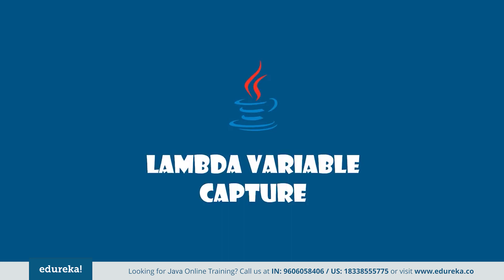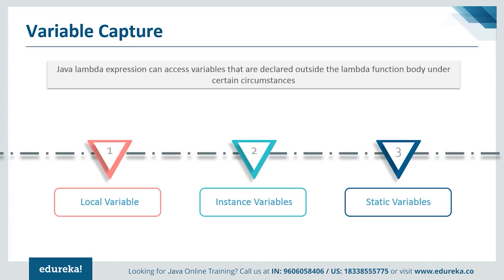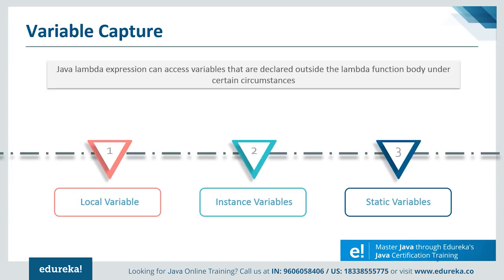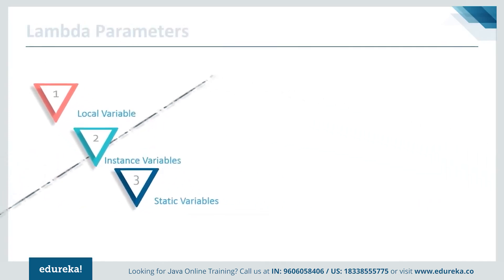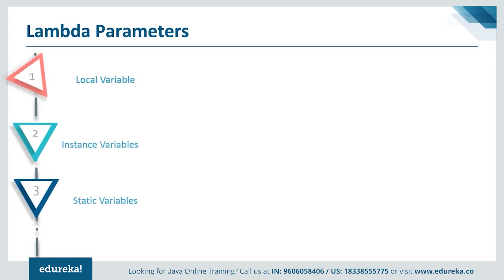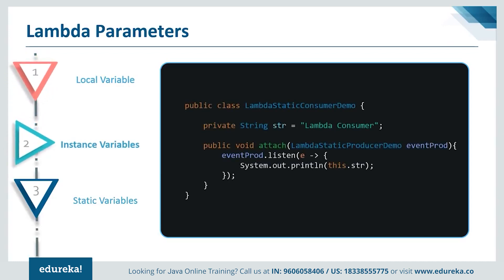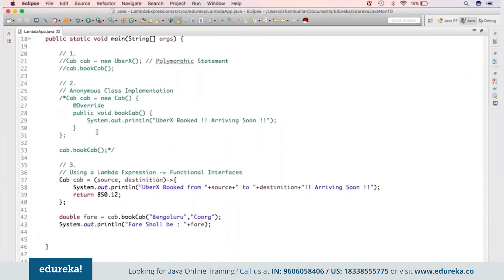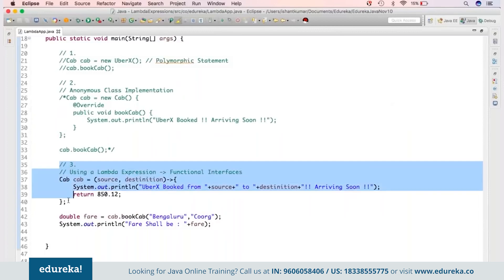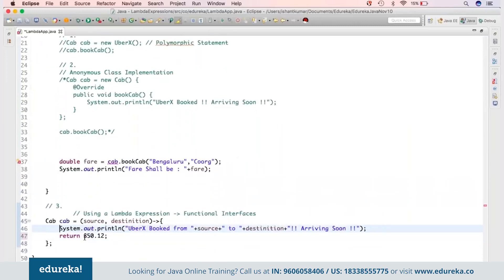There can be local variables, instance variables, and static variables accessed inside a lambda. Java lambda expressions can access variables declared outside the lambda function body under certain circumstances. The very first is a local variable — you can declare variables within the lambda expressions. Instance variables belong to your object and can be utilized in the lambda. Static variables can also be used in the lambda expression.